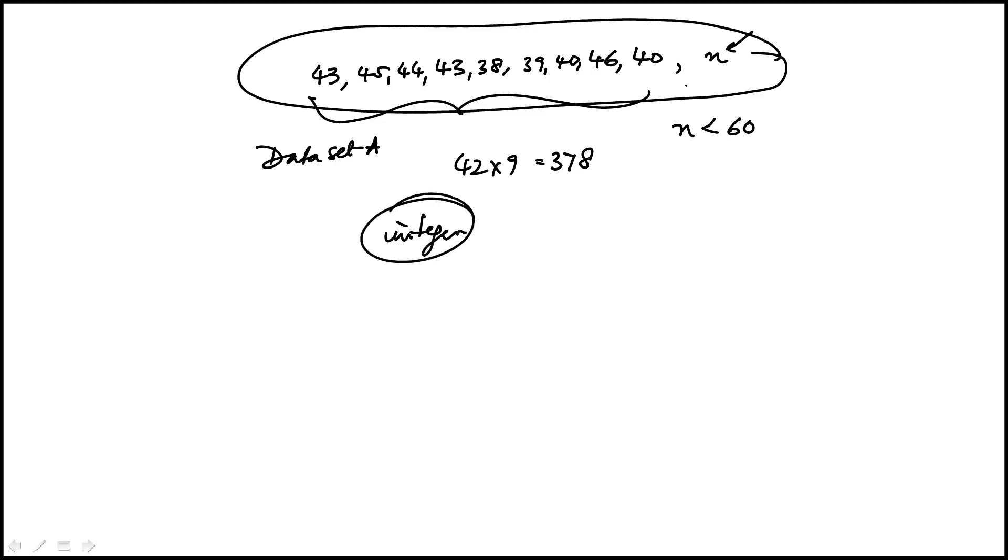If the tenth integer is n, the mean would be the sum of these nine plus n divided by 10. The condition is this needs to be an integer and has to be less than 60.